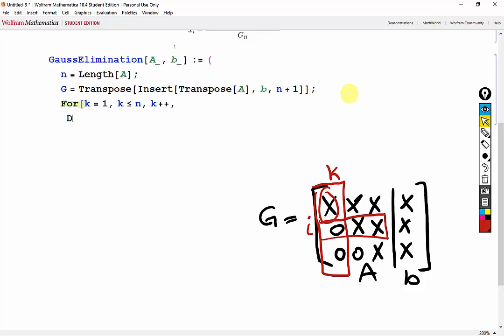Now we want to set up our do loop. Our new increment i will start from the row below K and go all the way until the end of the matrix.